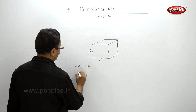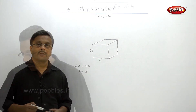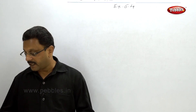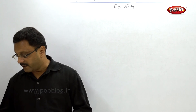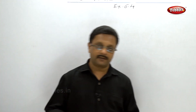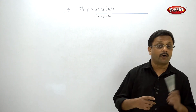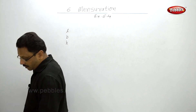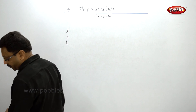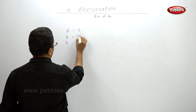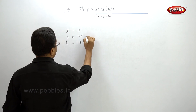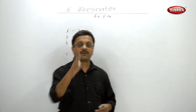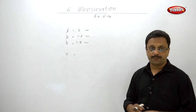A cuboidal water tank has length 2 meters, breadth 1.6 meters, and height 1.8 meters. Find the capacity of the tank in liters. First, let us find the volume — length × breadth × height is 2 × 1.6 × 1.8 meters. Please pause your video here and calculate the volume.